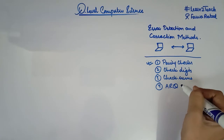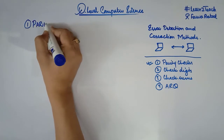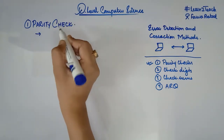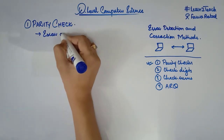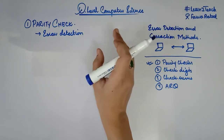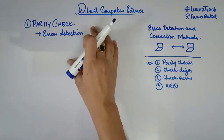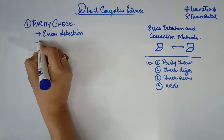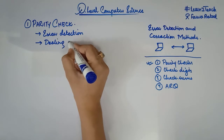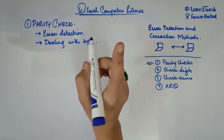Moving towards the first method — parity checks. Parity checks is an error detection method that helps you determine whether the data that has been received is corrupted or not. In this method, you are dealing with individual bytes that are going to be transmitted — you are checking one byte at a time.